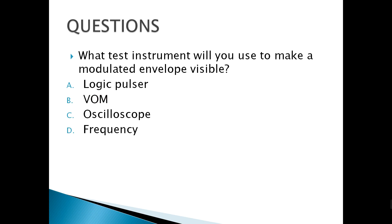What test instrument will you use to make a modulated envelope visible? A modulated envelope is an analog signal, and we can see it using our oscilloscope.